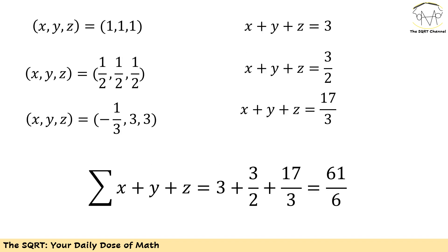Now we want to find the sum of all possible values of x plus y plus z. It's 3 for the first case, 3 over 2 for the second case, and 17 over 3 for the third case. The other cases are similar to these three. The total sum comes out to 61 over 6.